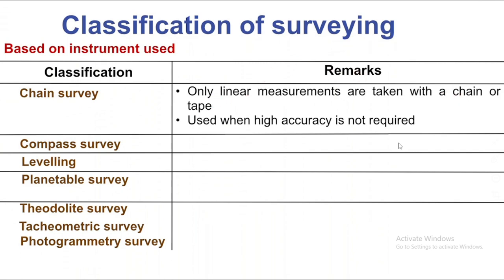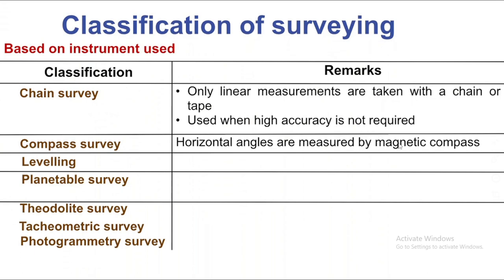We are going to take a look at the objectives. For chain surveying, we only need linear measurements. For theodolite survey, we are measuring horizontal angles. For compass survey, we are measuring with the compass.